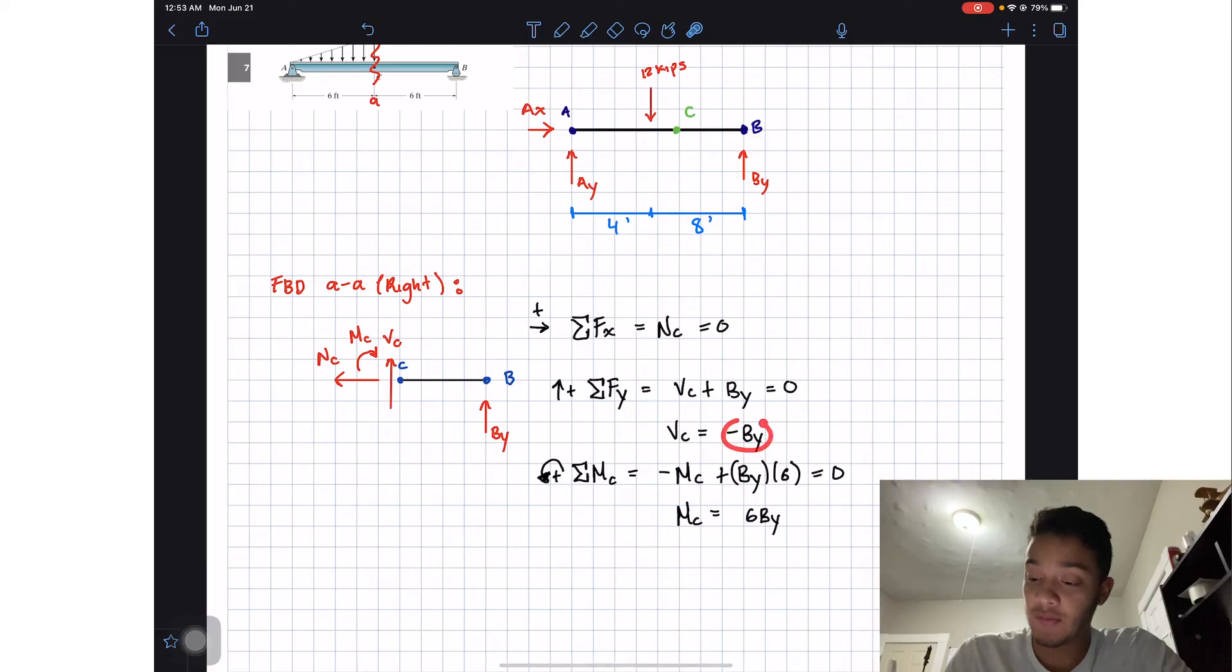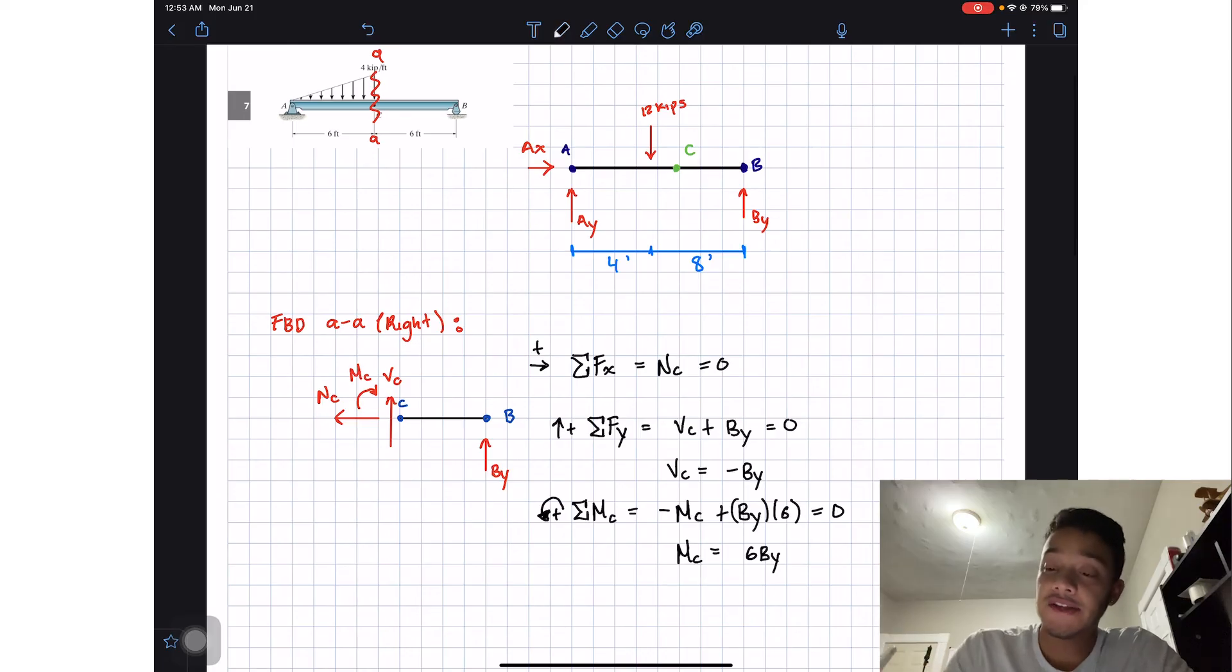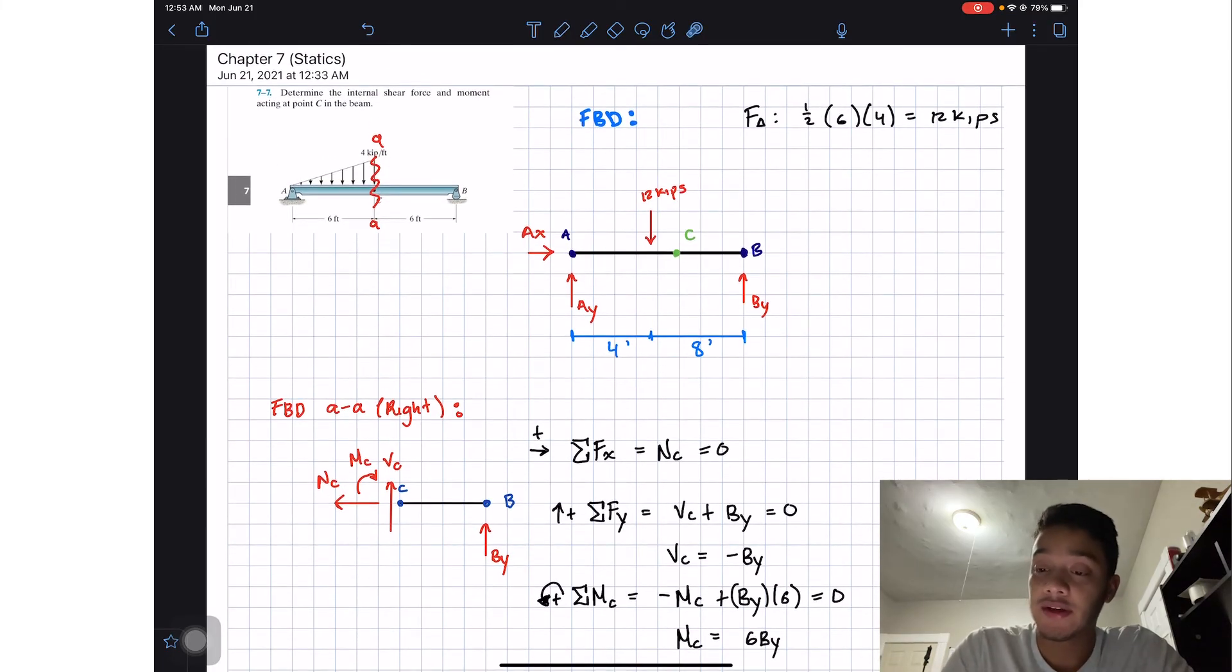Now all we need to find is By so we know Vc and Mc. That's why we got our big free body diagram. If we apply a summation of moments around point A we will cancel Ax and Ay, and again we're going to assume that going counterclockwise is positive.